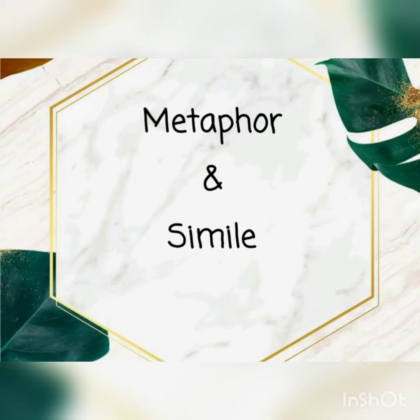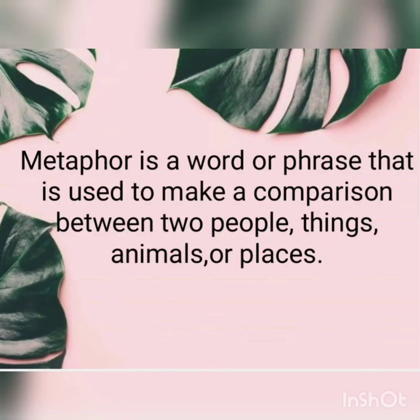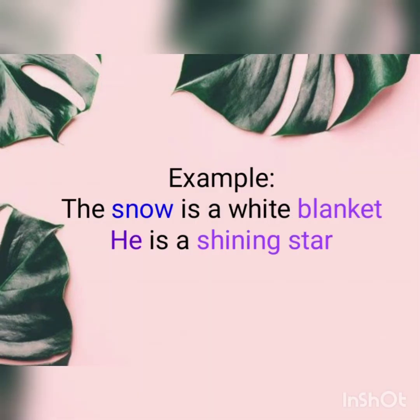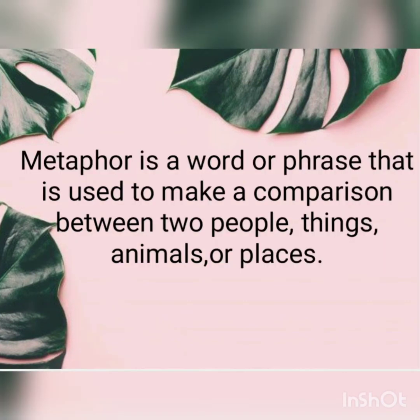Next are two poetic devices — metaphor and simile. They may seem similar but they differ from each other. A metaphor is a word or phrase used to make a comparison between two people, things, animals, or a place. For example, 'the snow is a white blanket' — here, snow is being compared with a blanket. Another example: 'he is a shining star' — someone is being compared with a shining star.